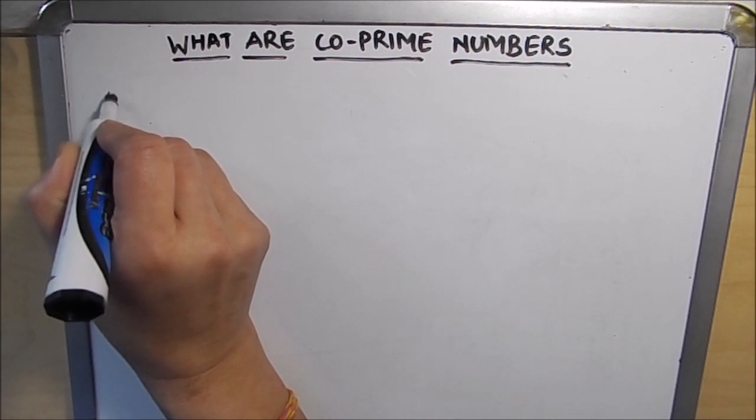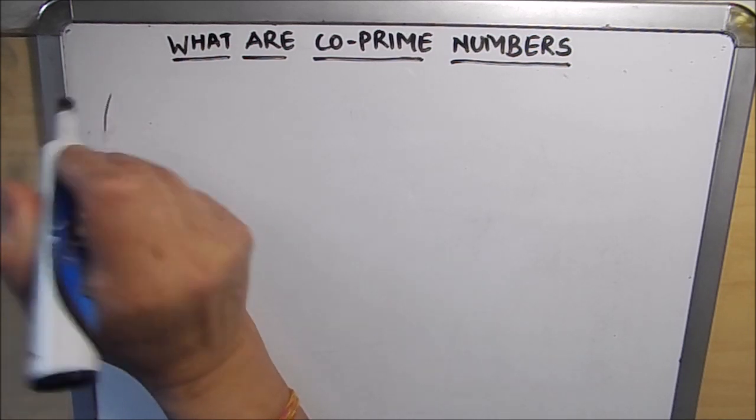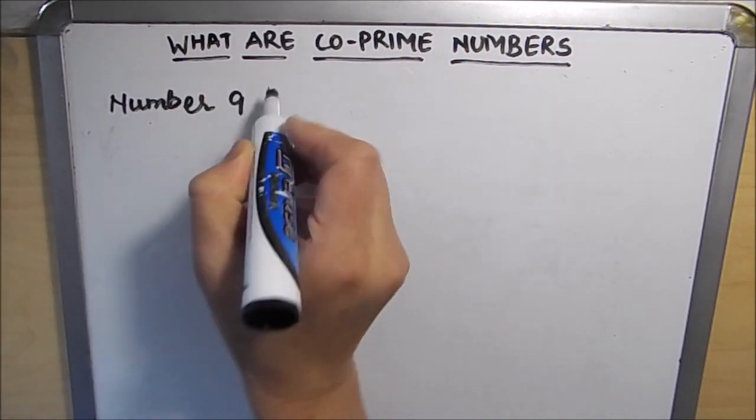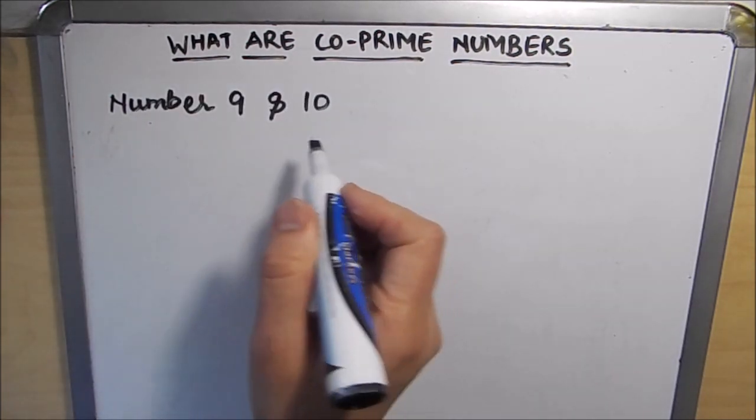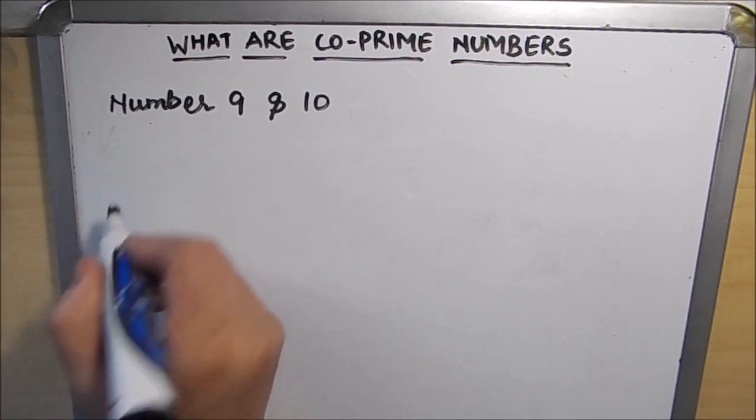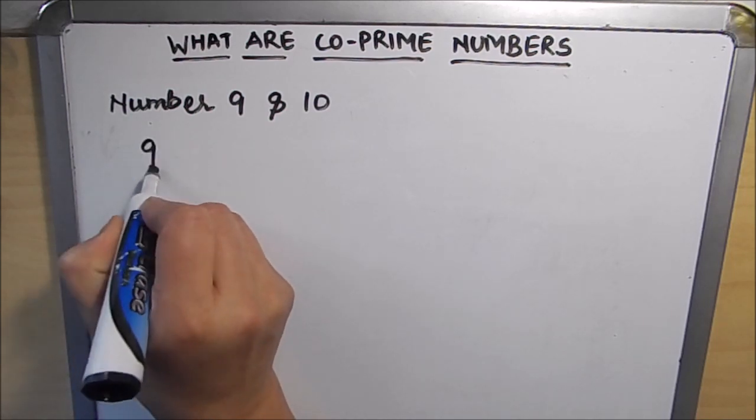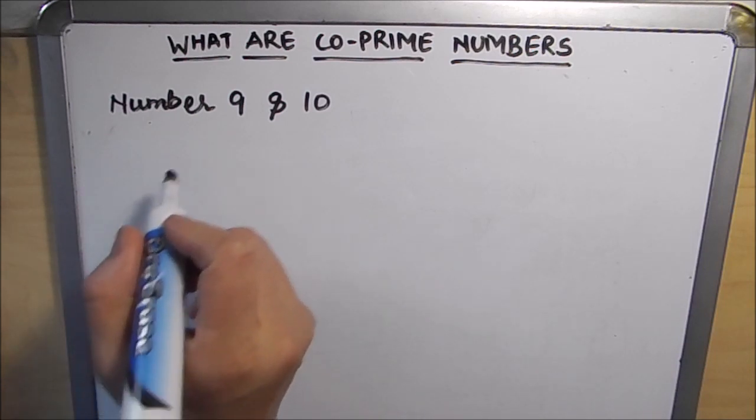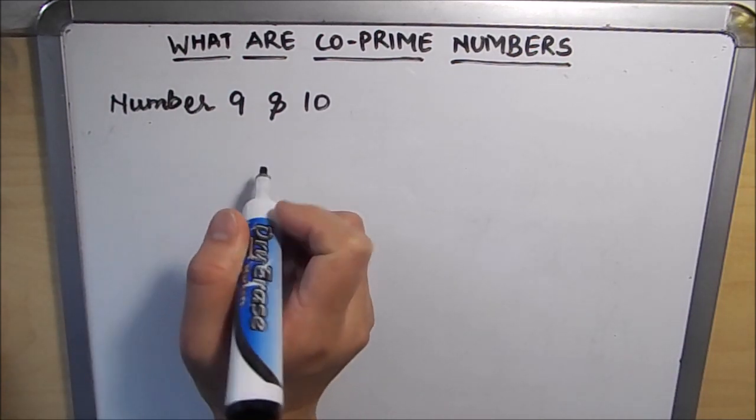So let's take two numbers, number 9 and 10. To check whether these numbers are co-prime or not, we have to find the factors of these numbers. So let's find the factors of 9 and 10 here.